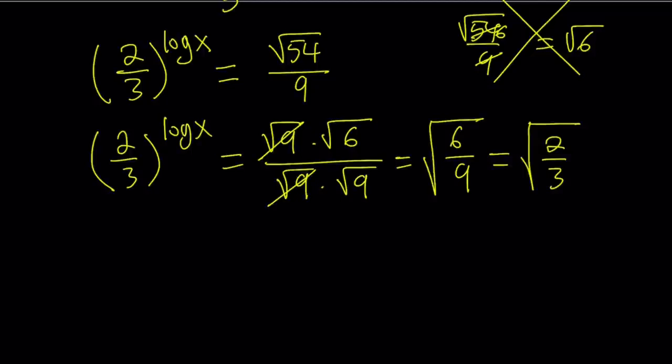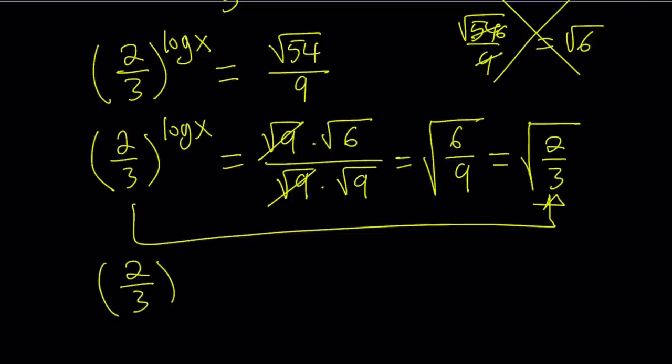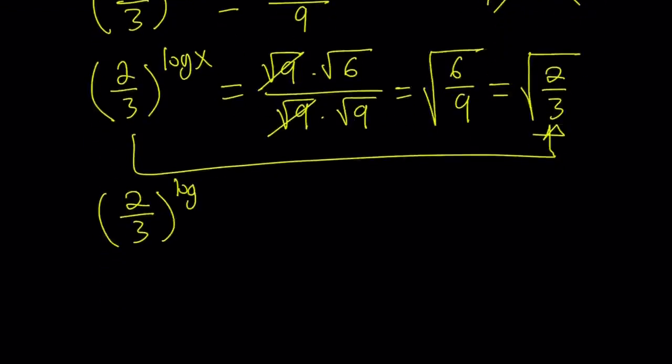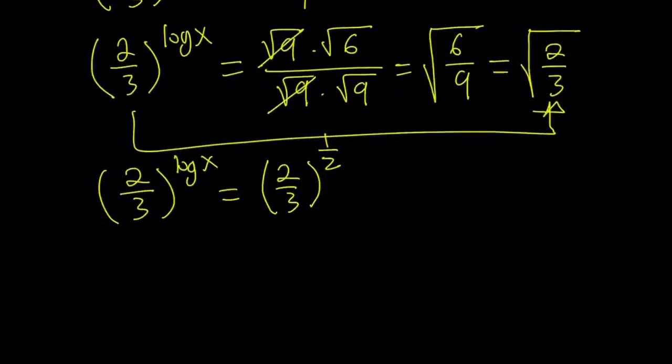Now look at the first expression. Look at the last one. And if you compare those two directly, you're going to notice that we can find log X from here. The square root of 2 thirds can be written as 2 thirds to the power 1 half. As you know, we can write a radical using fractional exponents and this is how you do with square roots. So from here, since the bases are the same, we can safely say that log X is equal to 1 half.